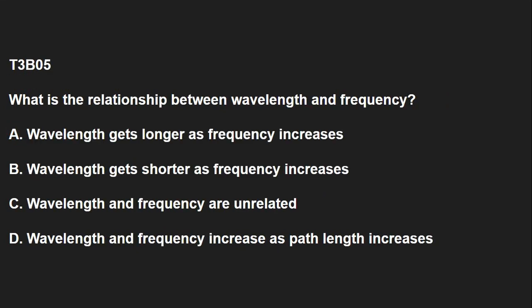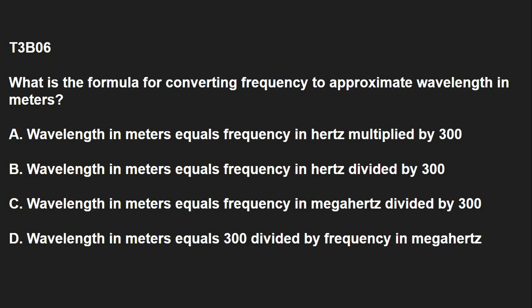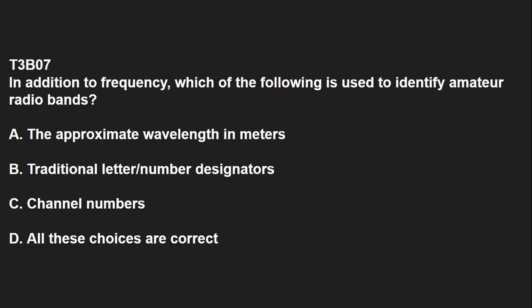T3B05: What is the relationship between wavelength and frequency? The answer is wavelength gets shorter as frequency increases. T3B06: What is the formula for converting frequency to approximate wavelength in meters? Wavelength in meters equals 300 divided by frequency in megahertz. T3B07: In addition to frequency, which of the following is used to identify amateur radio bands? The approximate wavelength in meters — so you look at 6 meters, 2 meters.